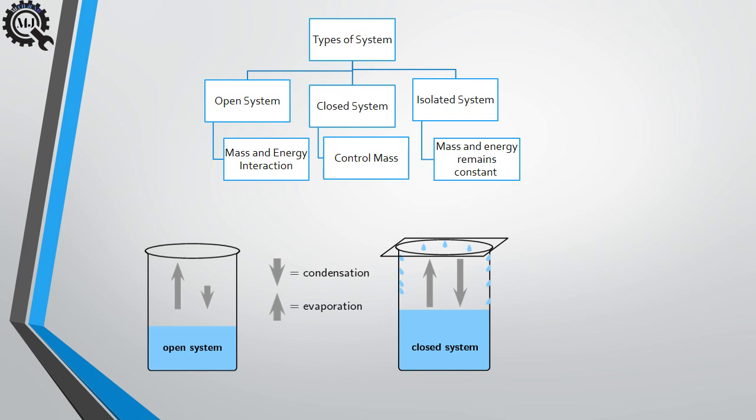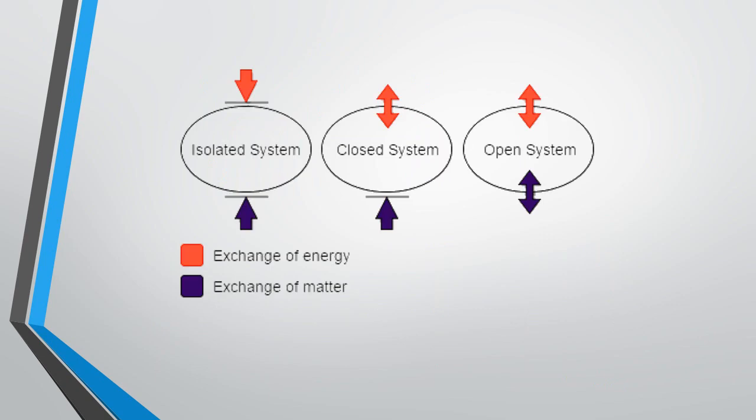Now let's see the isolated system. In an isolated system, neither mass nor energy transfer takes place. Isolated system is actually very difficult to attain in day-to-day life, but up to a certain extent we can achieve it. An example of an isolated system is a thermos flask — it has insulating materials so that heat in the form of energy cannot transfer from the inside surface to the outside surrounding. As we can see in the figure, in an isolated system mass and energy remain constant, in a closed system mass is constant, and in an open system both mass and energy interaction take place.